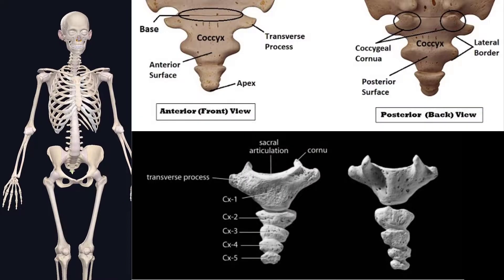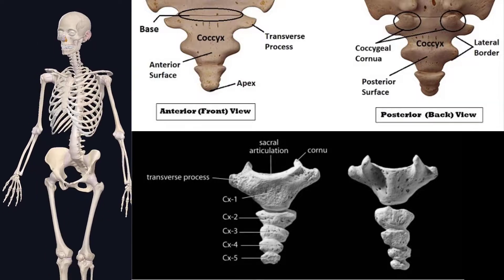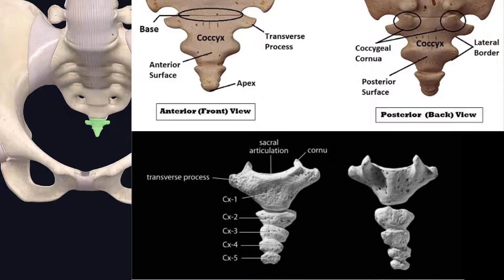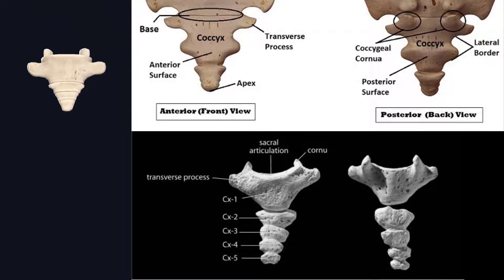Hello friends, I am Bharat. In this video we study the anatomy of coccyx — its parts and surfaces. The coccyx, known as the tailbone, is located at the end of the vertebral column. We have selected and zoomed into the coccyx bone to study its anatomy very well.